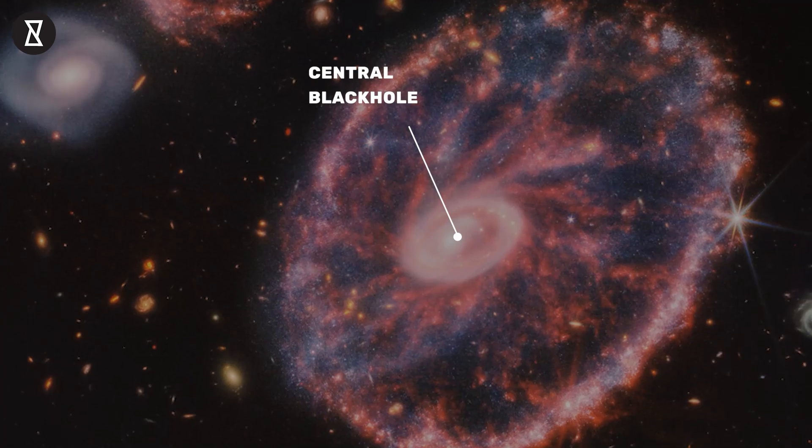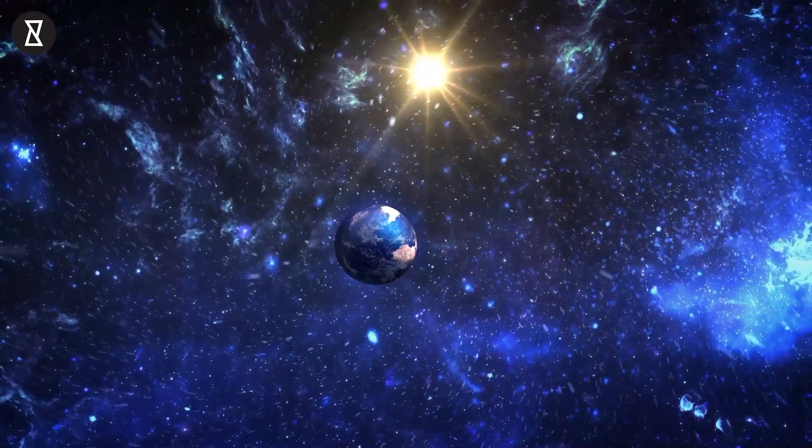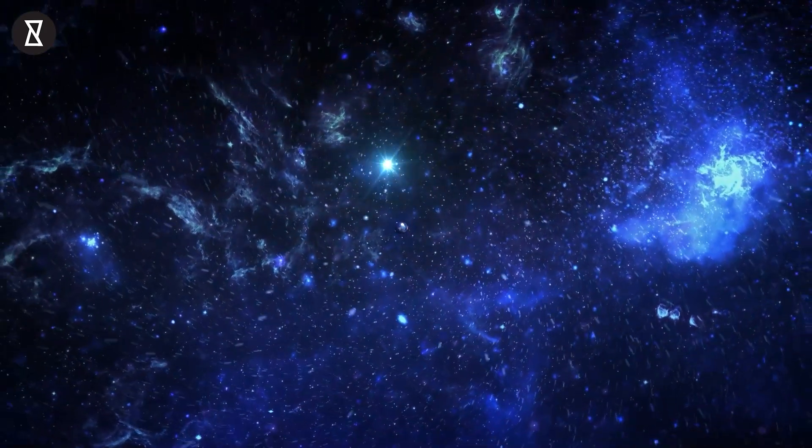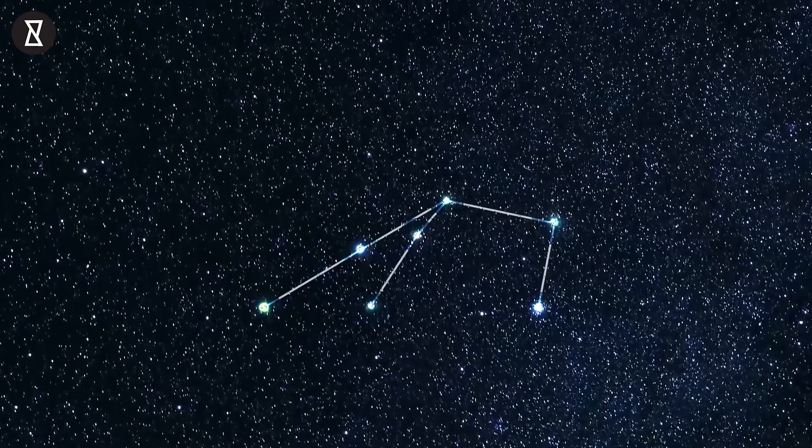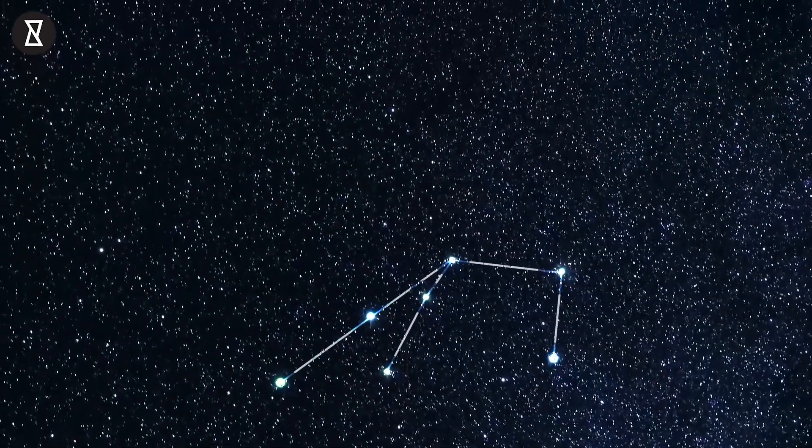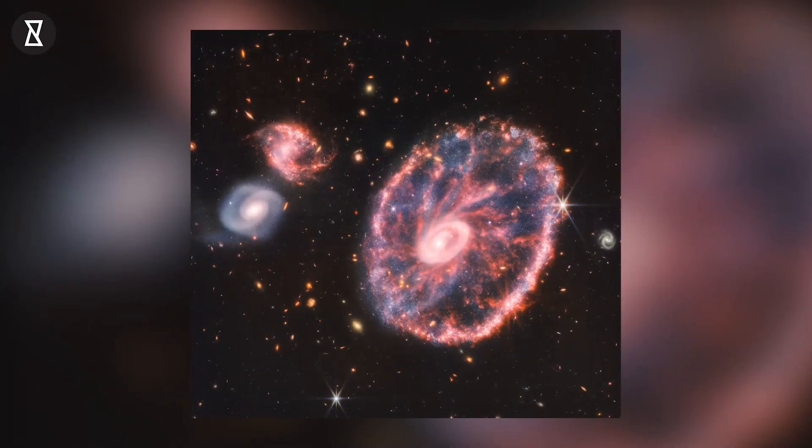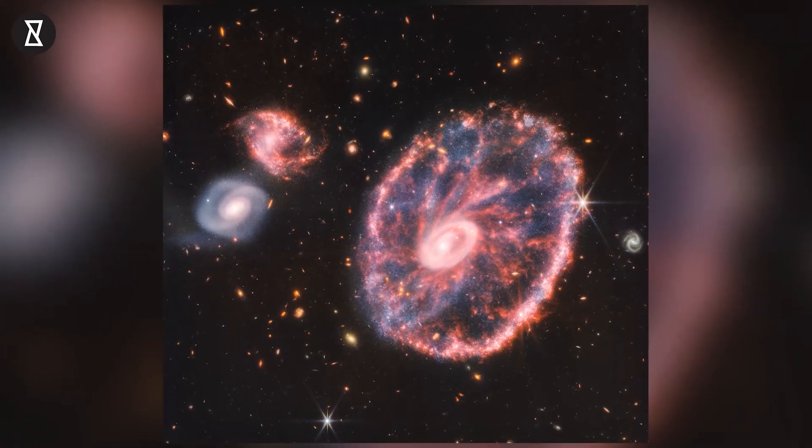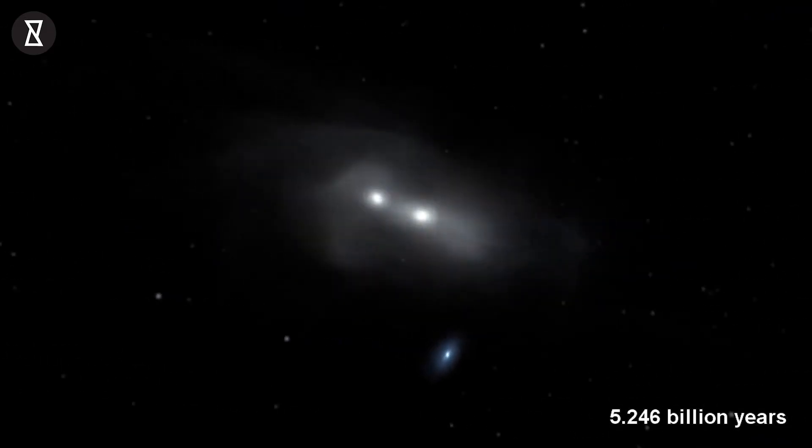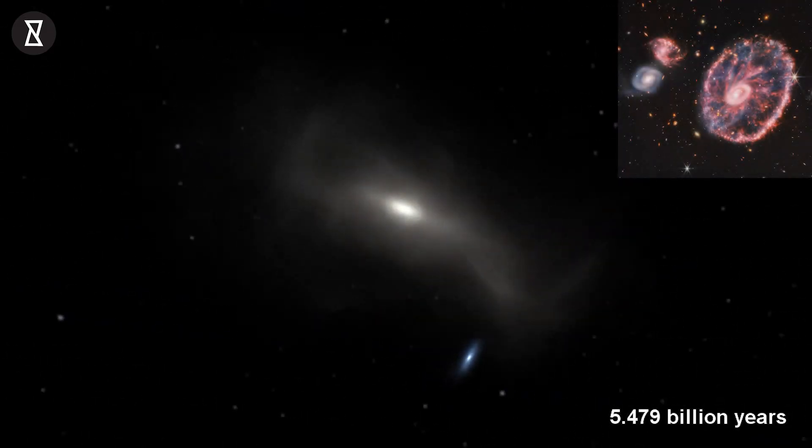The Cartwheel Galaxy, located about 500 million light-years away in the Sculptor constellation, is a rare sight. Its appearance, much like that of the wheel of a wagon, is the result of an intense event: a high-speed collision between a large spiral galaxy and a smaller galaxy not visible in this image.